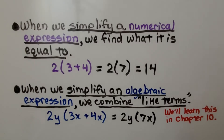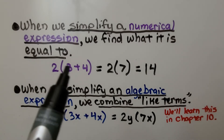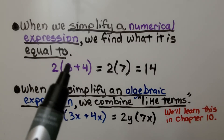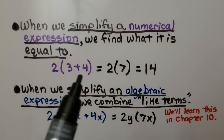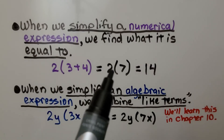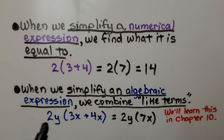When we simplify a numerical expression, we find what it's equal to. Here we have 2 multiplied by (3 plus 4) in parentheses. We do the parentheses first, so we have 7. That means we have 2 times 7, which equals 14. When we simplify an algebraic expression, we just combine like terms and leave it at that.